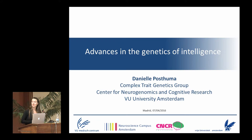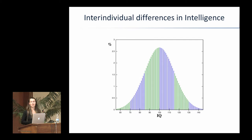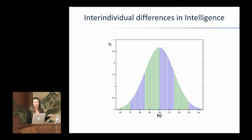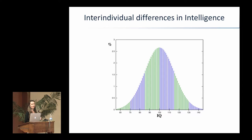I will talk about advances we've made in the past decade in finding genes for intelligence. Usually when I talk about intelligence, I start with this picture, because this is basically the basis of what I'm interested in. We see a normal distribution of IQ, and the assumption is that IQ test scores are a good proxy of intelligence. We can debate about what intelligence is, but here we assume that the IQ test does a very good job.